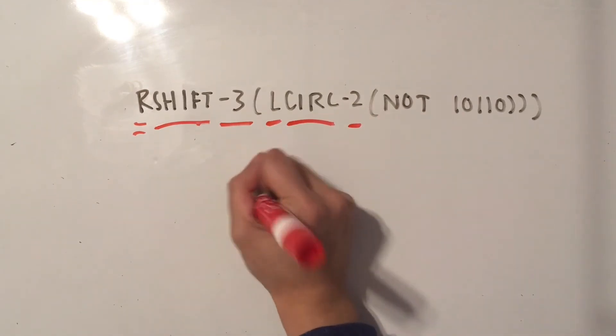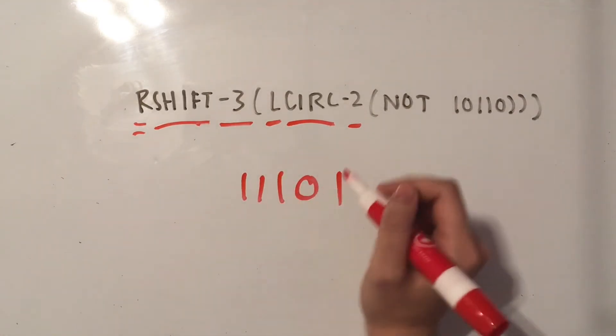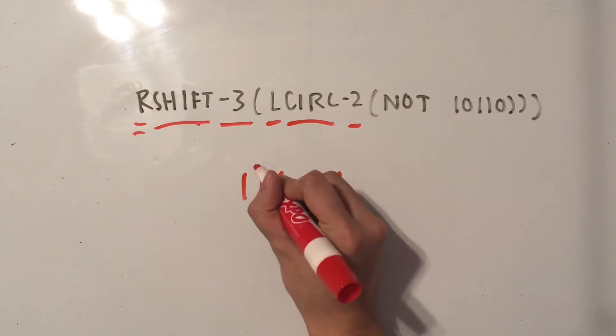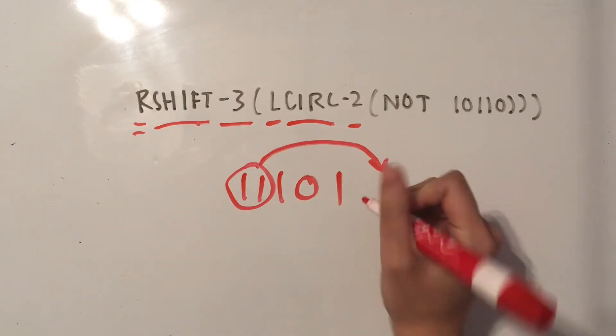These 2 just tell you how many you're going to move. So with the same number, we're starting from the left and we're selecting the first 2. And then we circle them over to the opposite side.